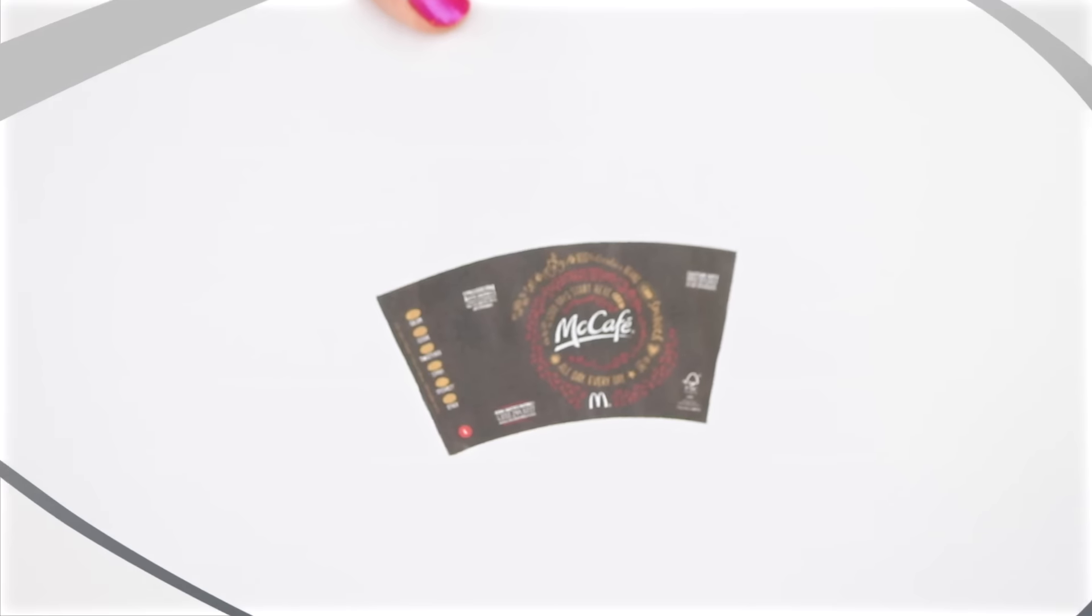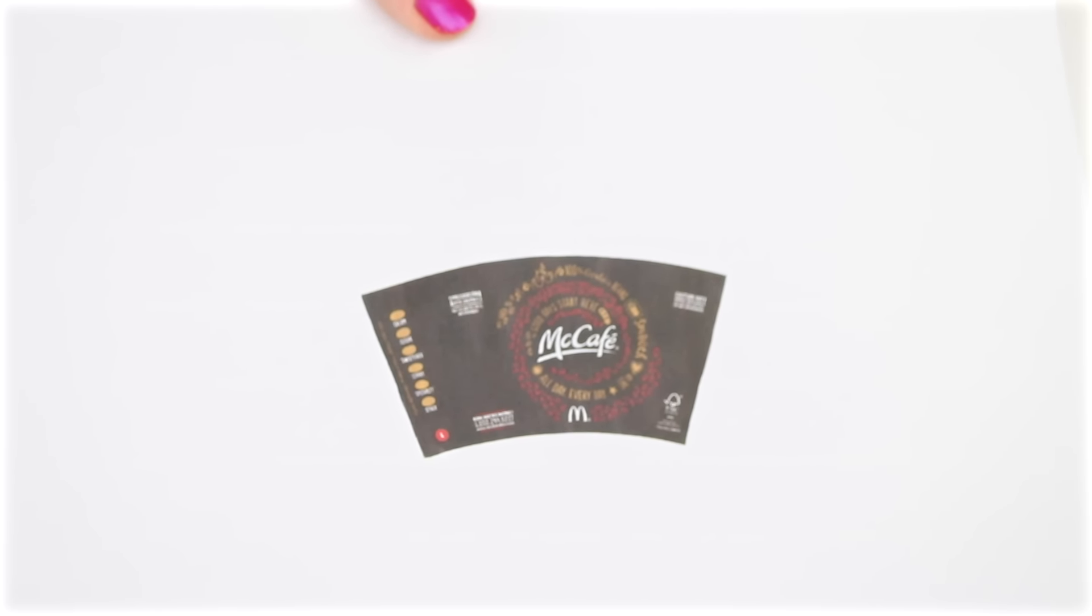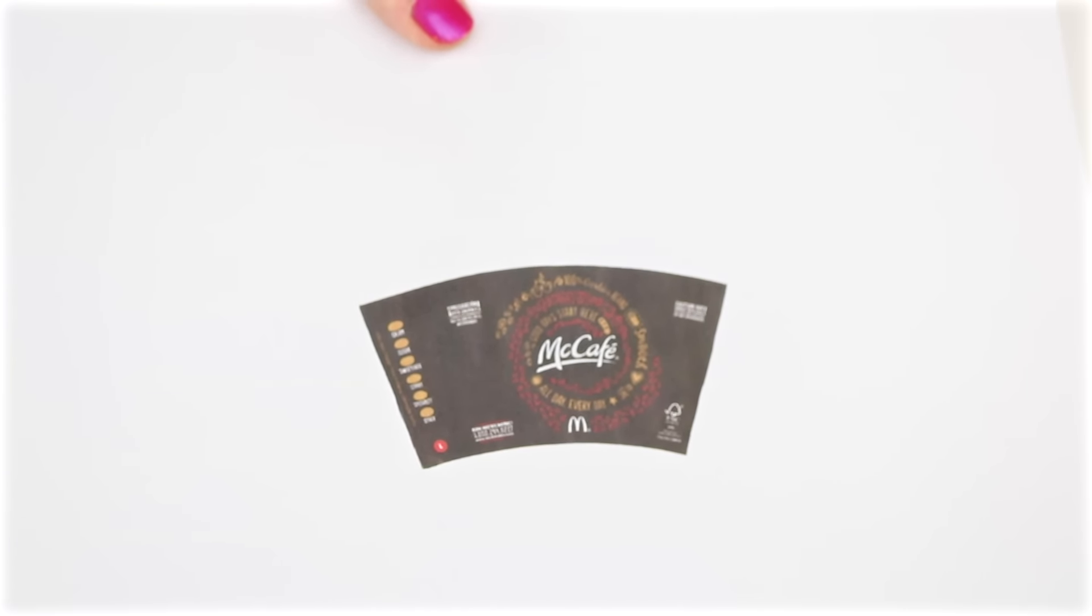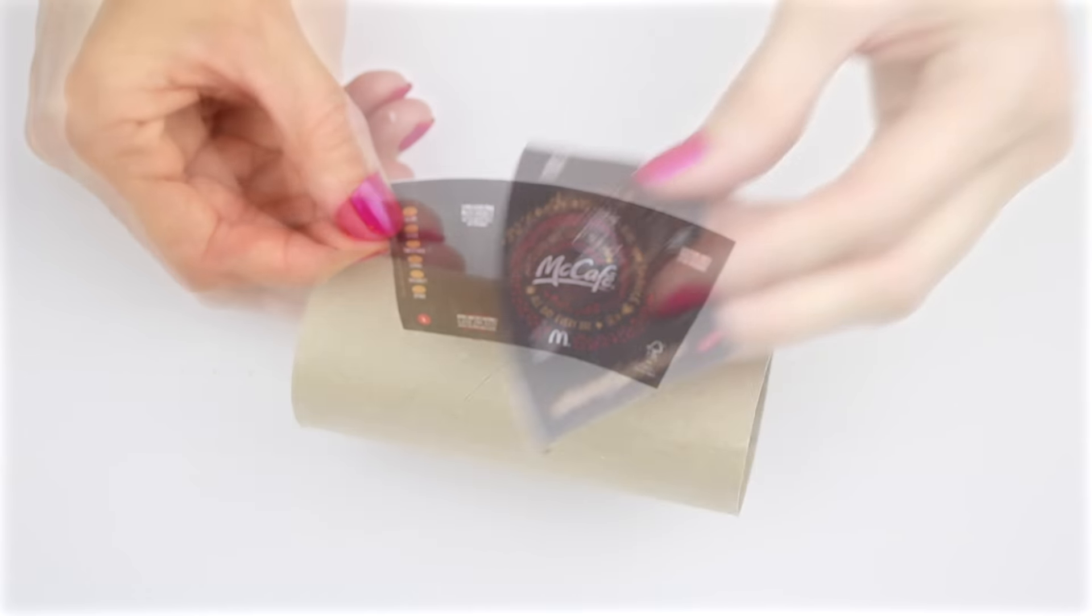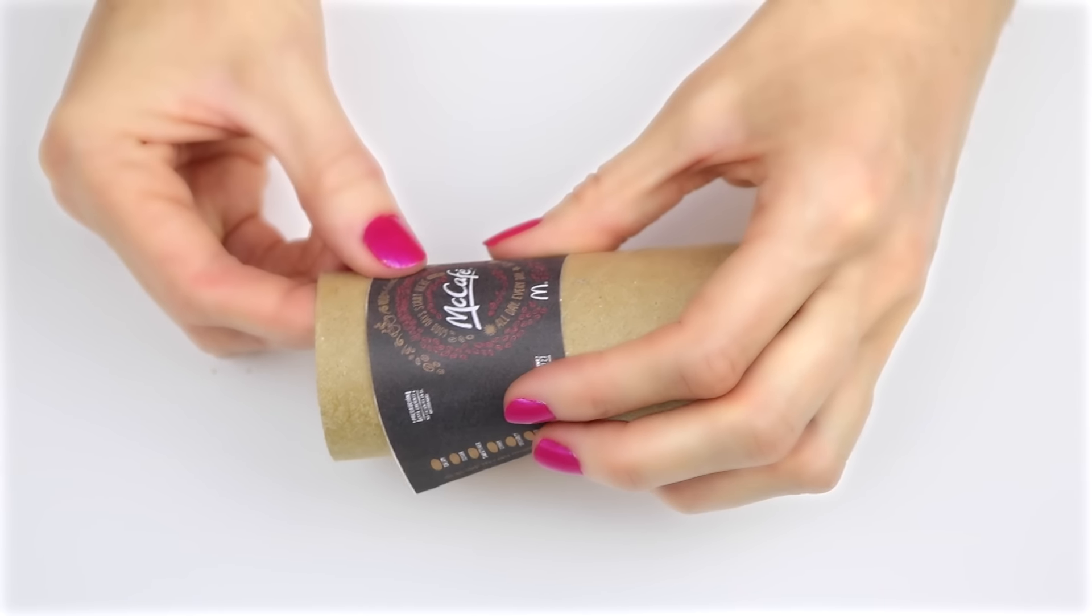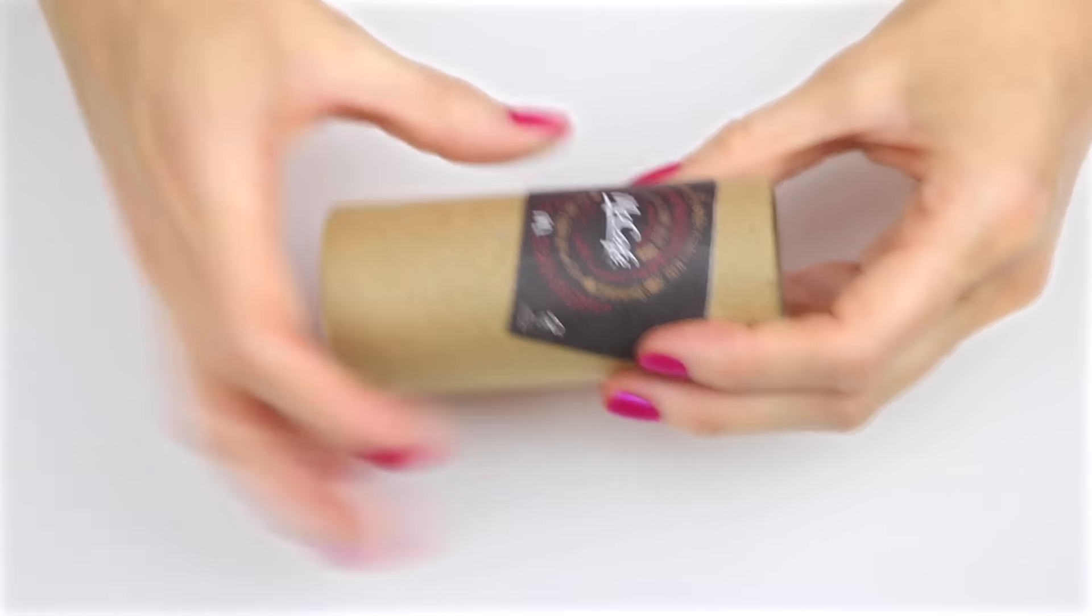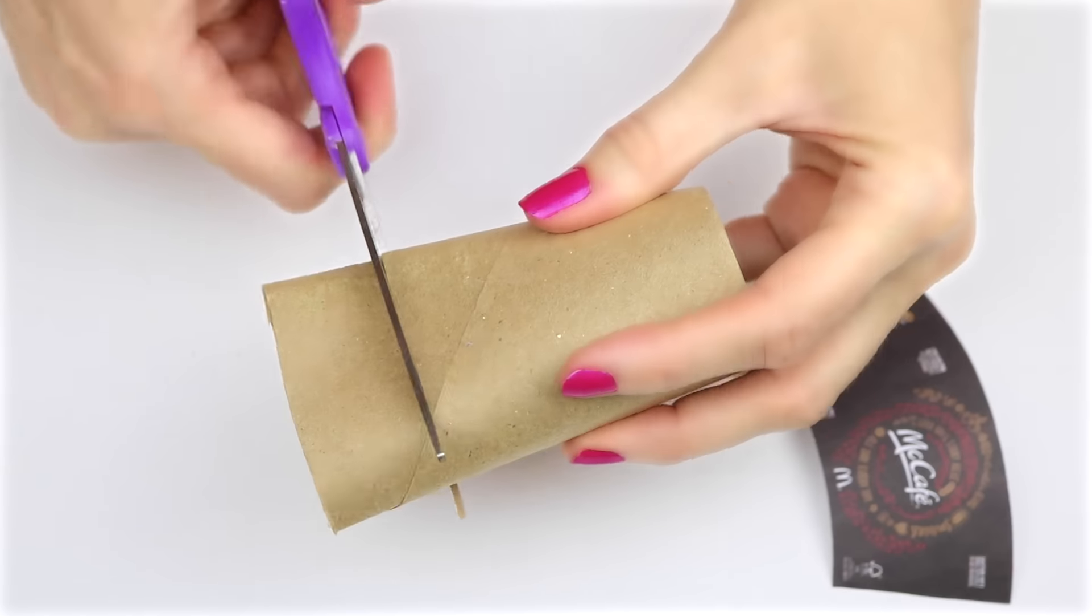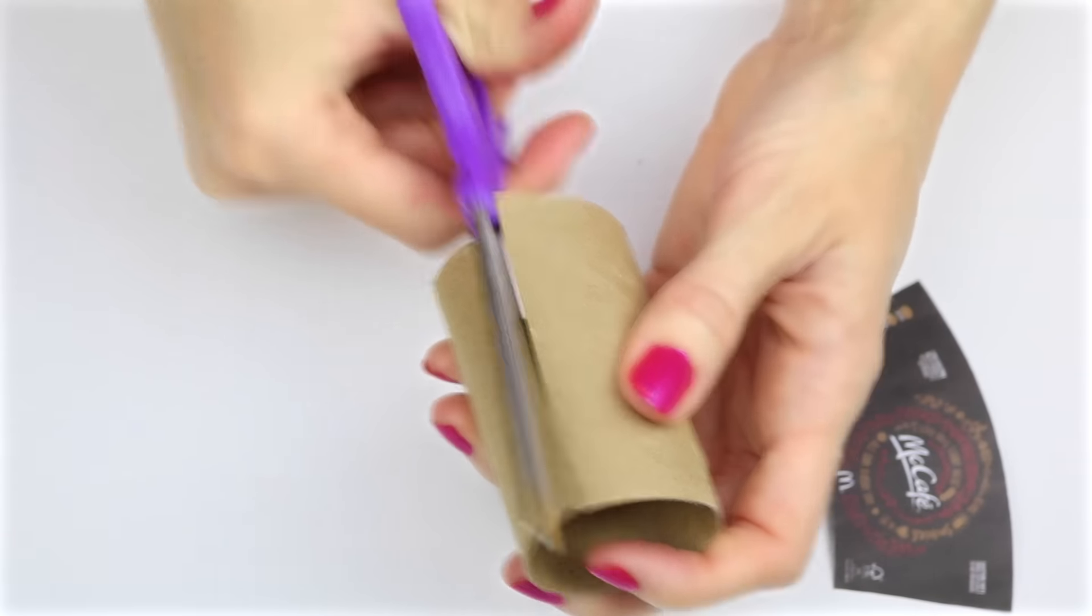The next DIY will be a mini eraser that looks like a McCafe mocha or hot chocolate. Use the link down below to print out this printable and then cut it out. Place the printable on a toilet paper roll, leaving space at the top, and cut out, leaving space at the bottom.